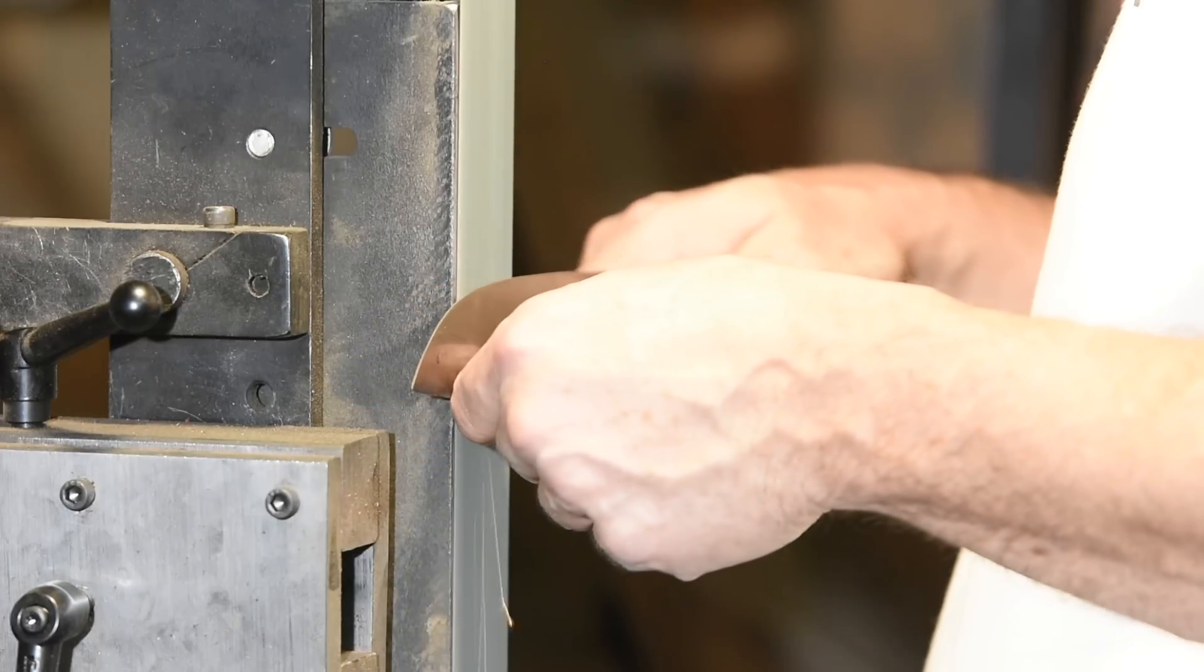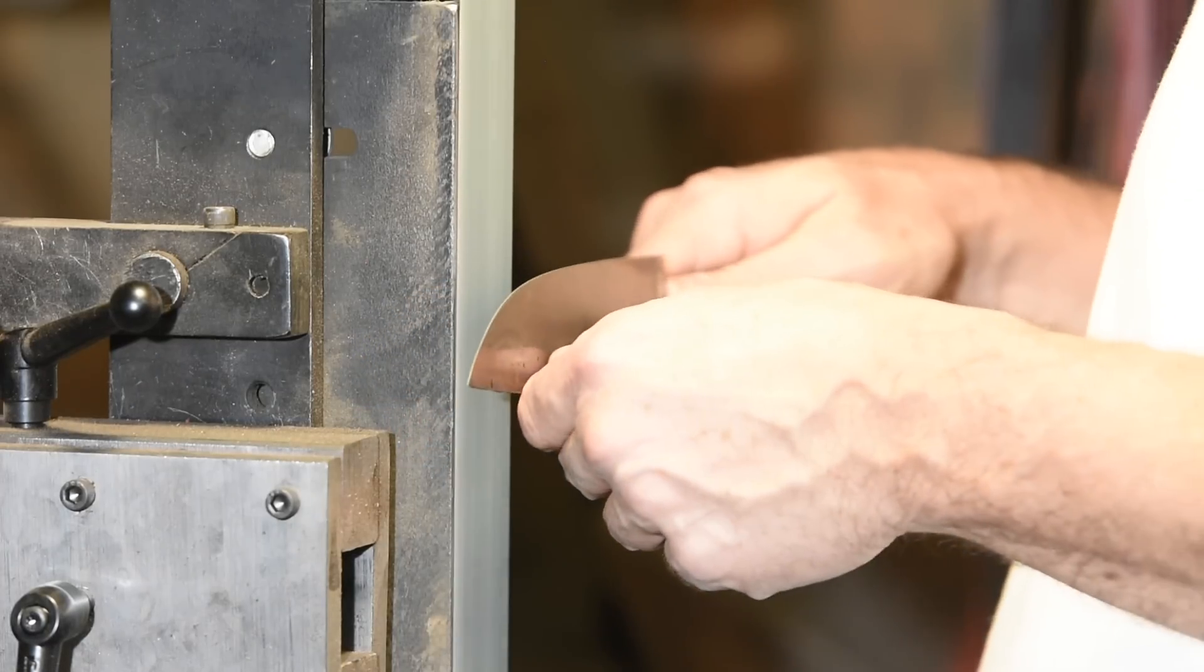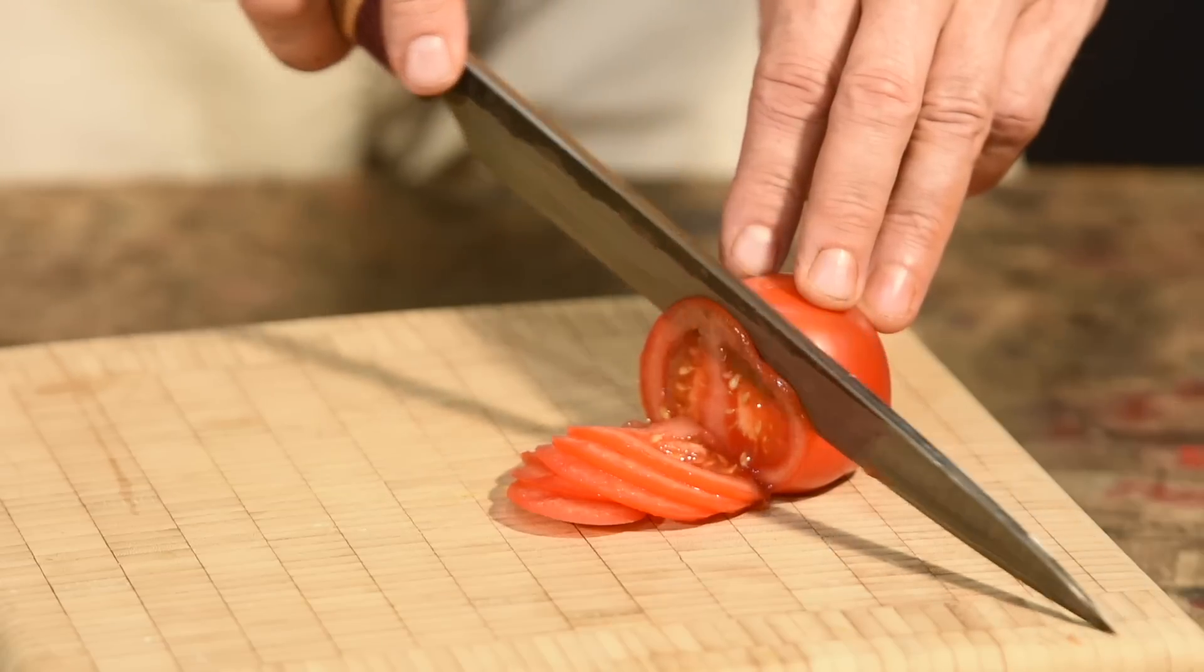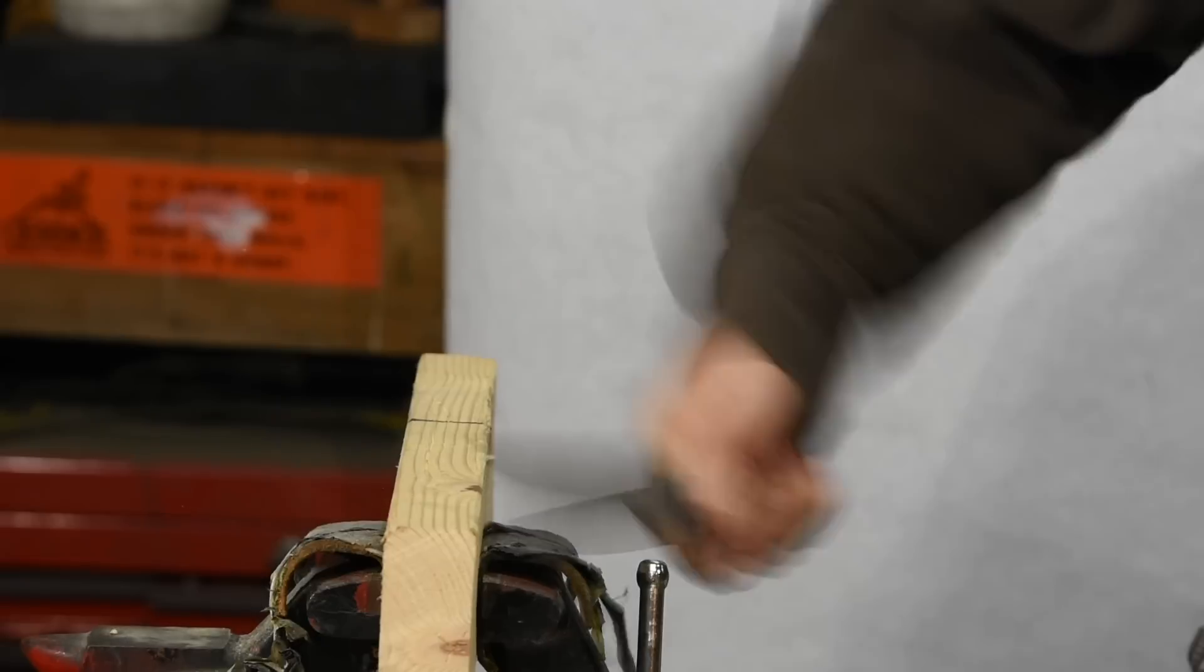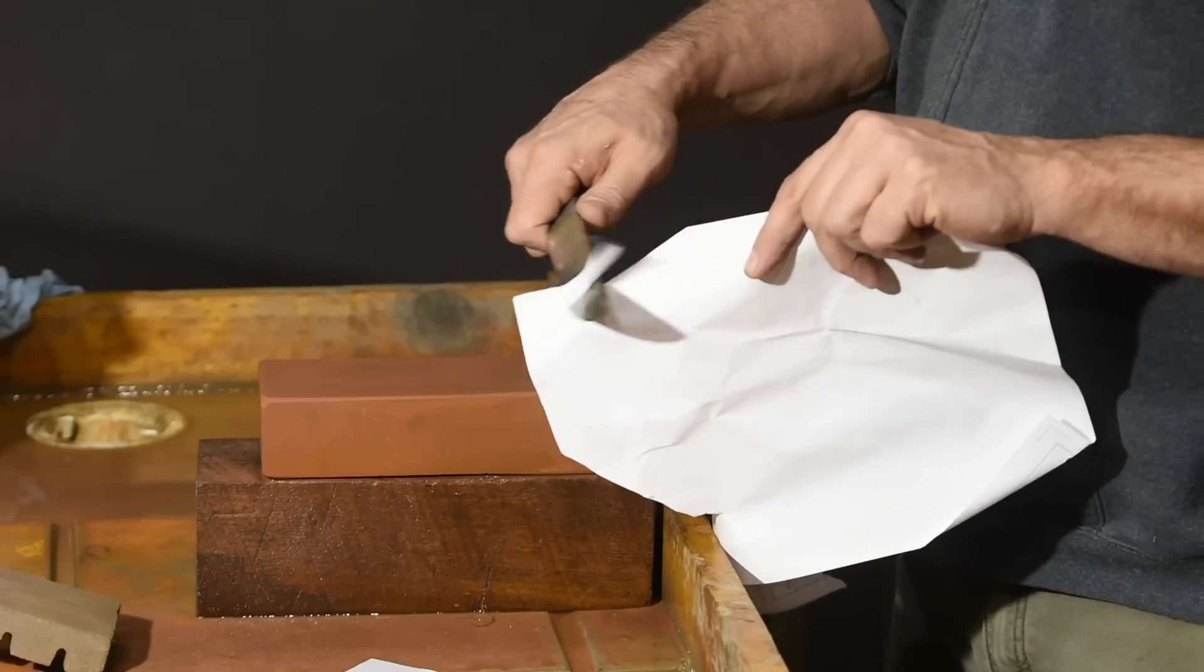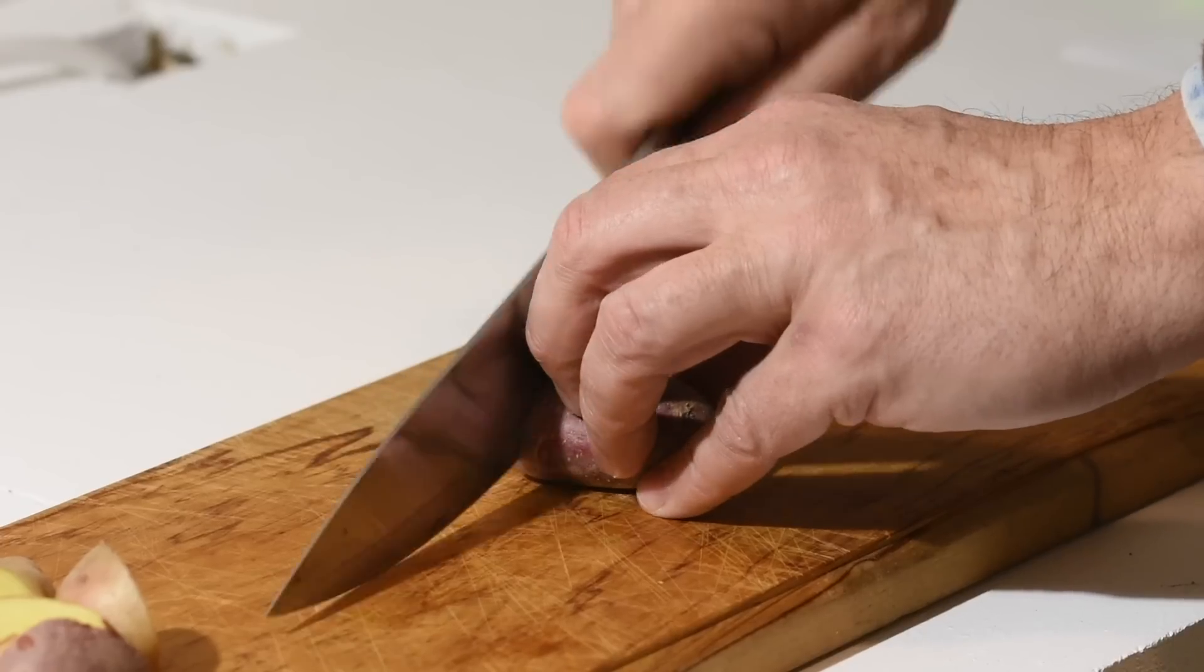So basically, you're looking to optimize for a particular use. Will you be cutting cloth, flesh, vegetables, boxes, tape, fish bones, chicken bones?